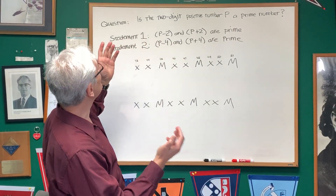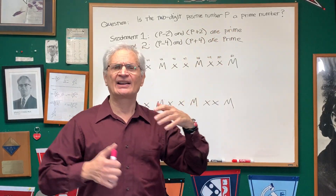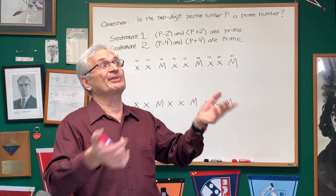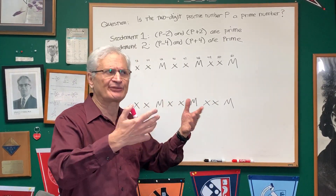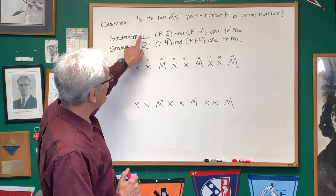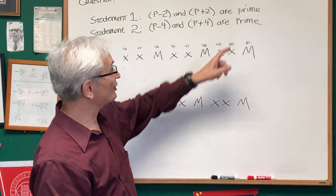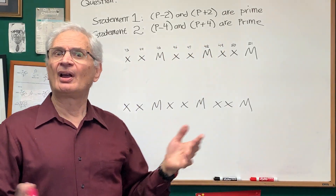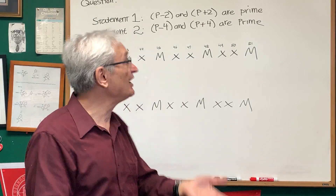Let's read the question we have to evaluate: Is the two-digit positive number P a prime number? A prime number is a number that can only be divided by itself and one, or a number that cannot be expressed as the product of two or more smaller numbers — three, five, seven, eleven are prime numbers. Statement one: P minus two and P plus two are prime — two integers to the left and two integers to the right are prime. Statement two: P minus four and P plus four are prime.